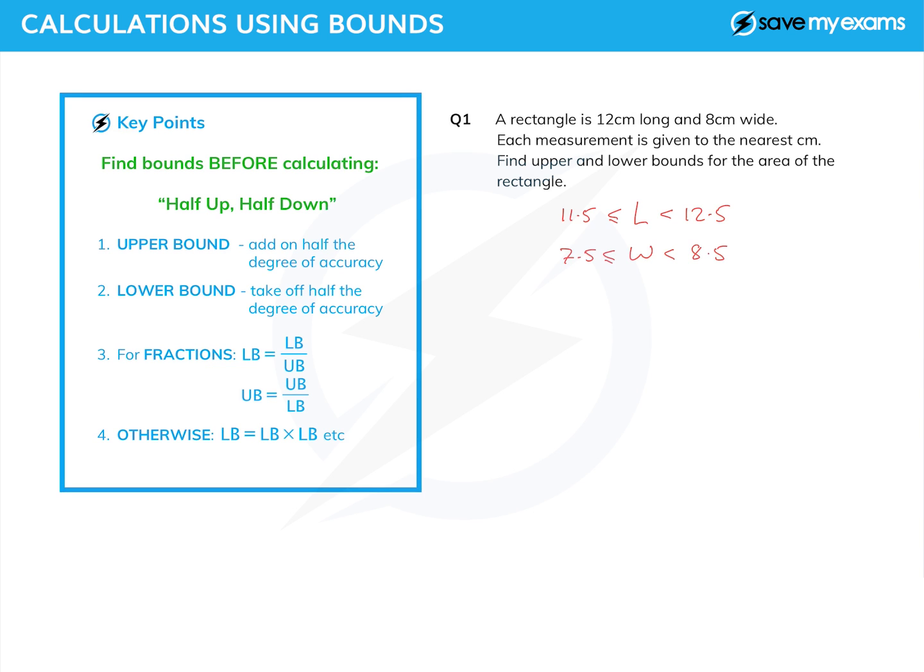Now I've written down the lower and upper bounds—I've actually written them in the form of an error interval there, but don't worry about that now. And so we can say the area, or rather the lower bound of the area, is simply going to be the two lower bounds multiplied together. So that's 11.5 times 7.5, which for my calculator is 86.25.